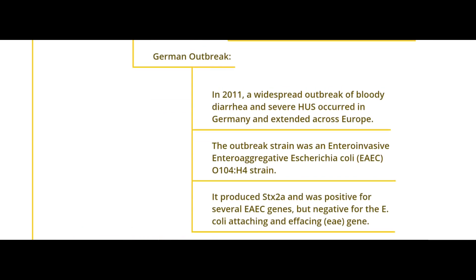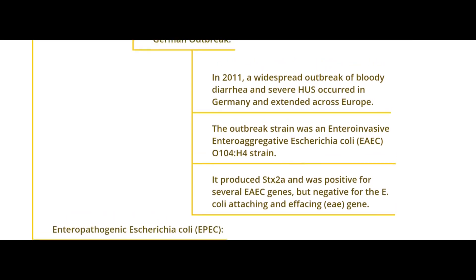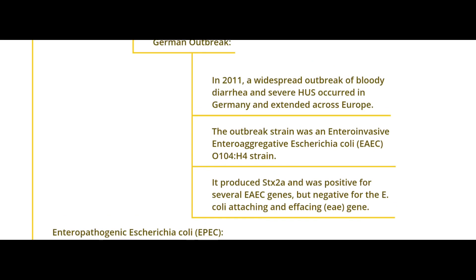We can discuss the German outbreak as a well-studied case. In 2011, a widespread outbreak of bloody diarrhea and severe HUS occurred in Germany and extended across Europe. It was linked to an enteroaggregative E. coli O104:H4 strain — an interesting case because this type of E. coli also produced STX2a and was positive for several EAEC genes, suggesting that EAEC genes were transferred from other types of E. coli, creating a new antigen for the immune system.